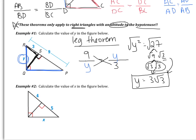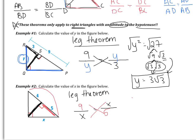Example 2: again, the altitude has no marking of any type — no x, no variable, no number — so this is going to be the leg theorem. The leg is x, so x gets used twice. The entire hypotenuse is 9, and the part of the hypotenuse connected to the leg is 5. Using cross products gives x squared equals 45. Since 45 is 9 times 5 and 9 is 3 times 3, I have a pair of 3's and a 5 left over. So x equals 3√5.